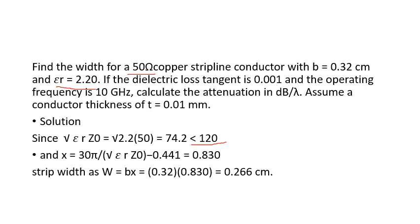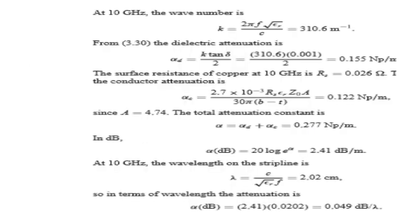We found that √(εᵣ) · Z₀ is less than 120, so we must find x. Solving gives x = 0.830, and using the formula w = x · b, we get the strip width as 0.266 cm. This answers the first part of the question. They also want the attenuation, so we need alpha_c and alpha_d. For alpha_c, again we check: √(εᵣ) · Z₀ is less than 120, so we use capital A from the formula sheet.